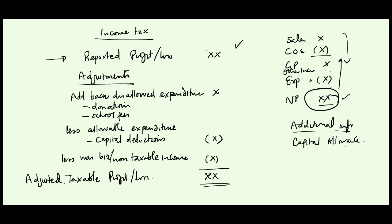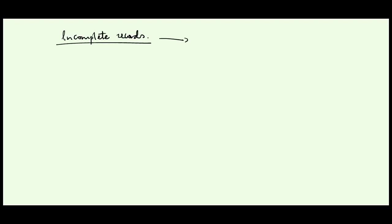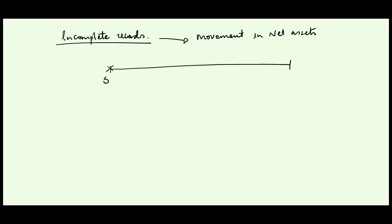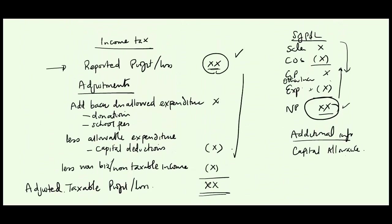There are some scenarios, especially when dealing with incomplete records, where you don't even have the statement of profit and loss. In such cases, you have to look at the movement in net assets. The concept is very simple: if between two dates you have net assets of, say, 50 and then they become 70, it is assumed that the increase is due to profit. So this becomes your starting point, from which you then make the adjustments.